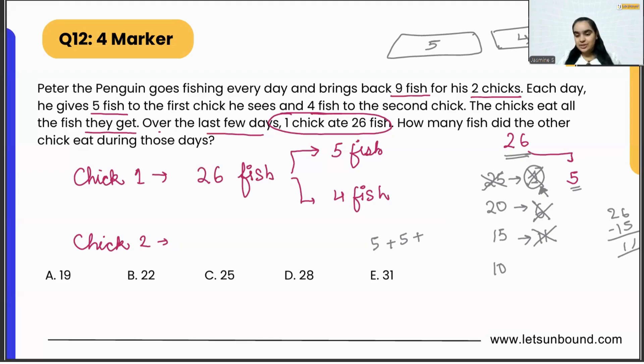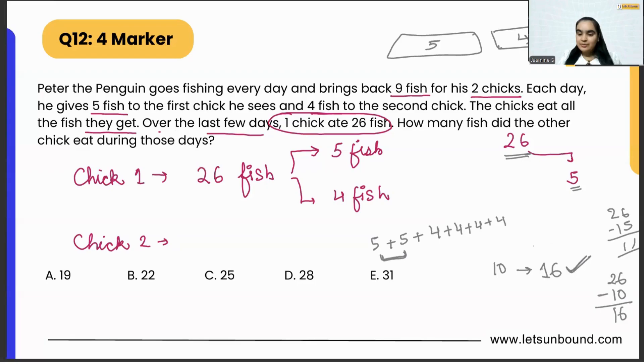Last one: Let's say for two days the chick got five fishes, so for the remaining days the chick will get 16 fish. 26 minus 10 is 16, and yes, 16 is divisible by four. So for the starting two days Chick 1 got five fishes, and then for next four days the chick got four fishes to eat, because four times four is 16.